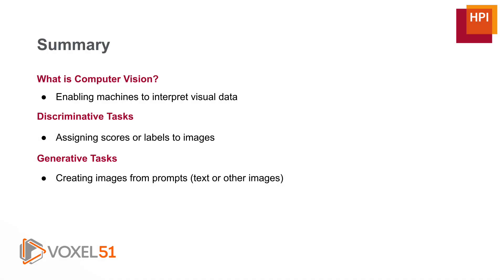So, to wrap up this first video, computer vision is about enabling machines to interpret visual data. We discuss two main categories for computer vision tasks: discriminative tasks, where we assign scores or labels to images, and generative tasks, where we create images from prompts, which can be text or other images.